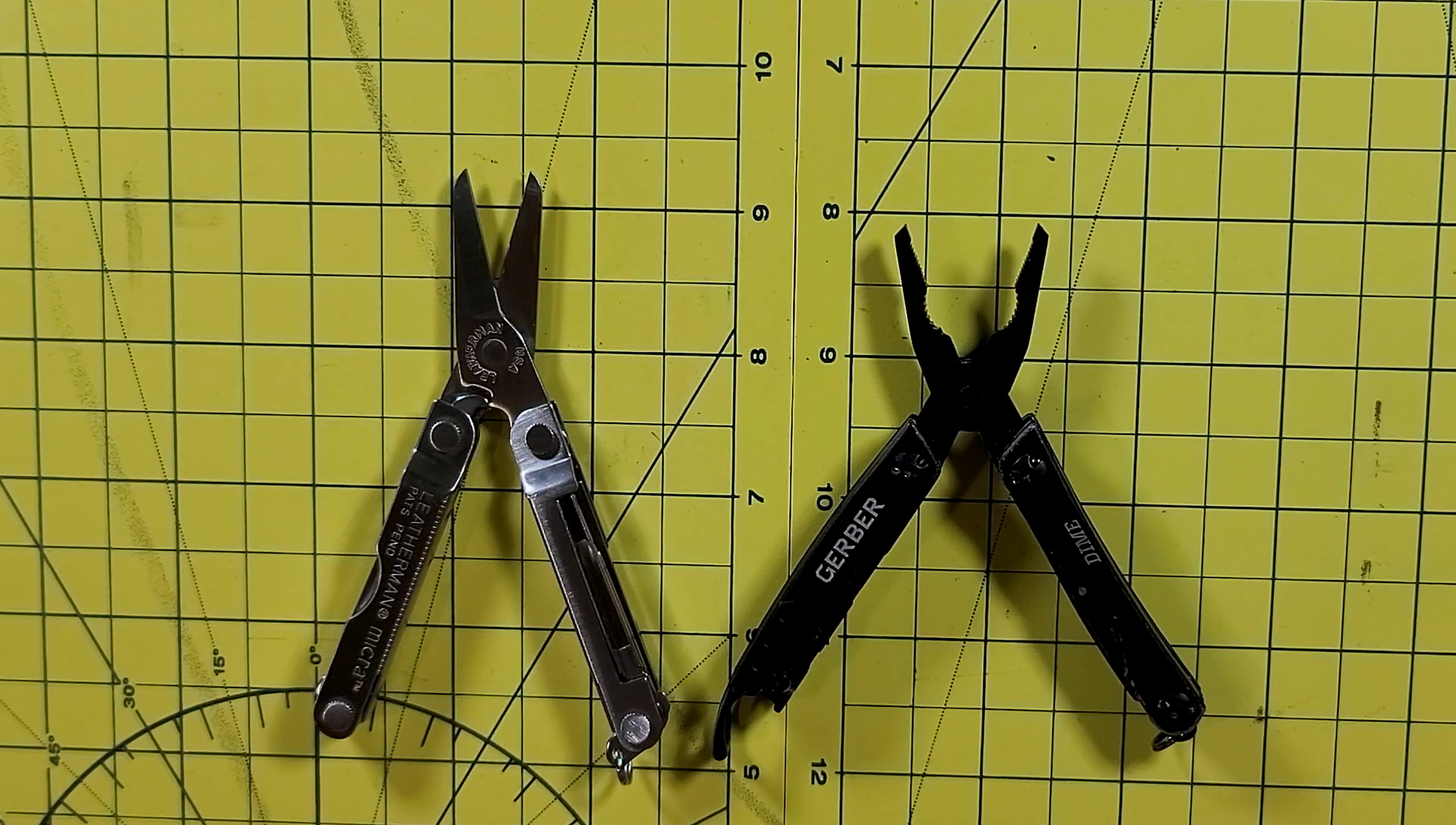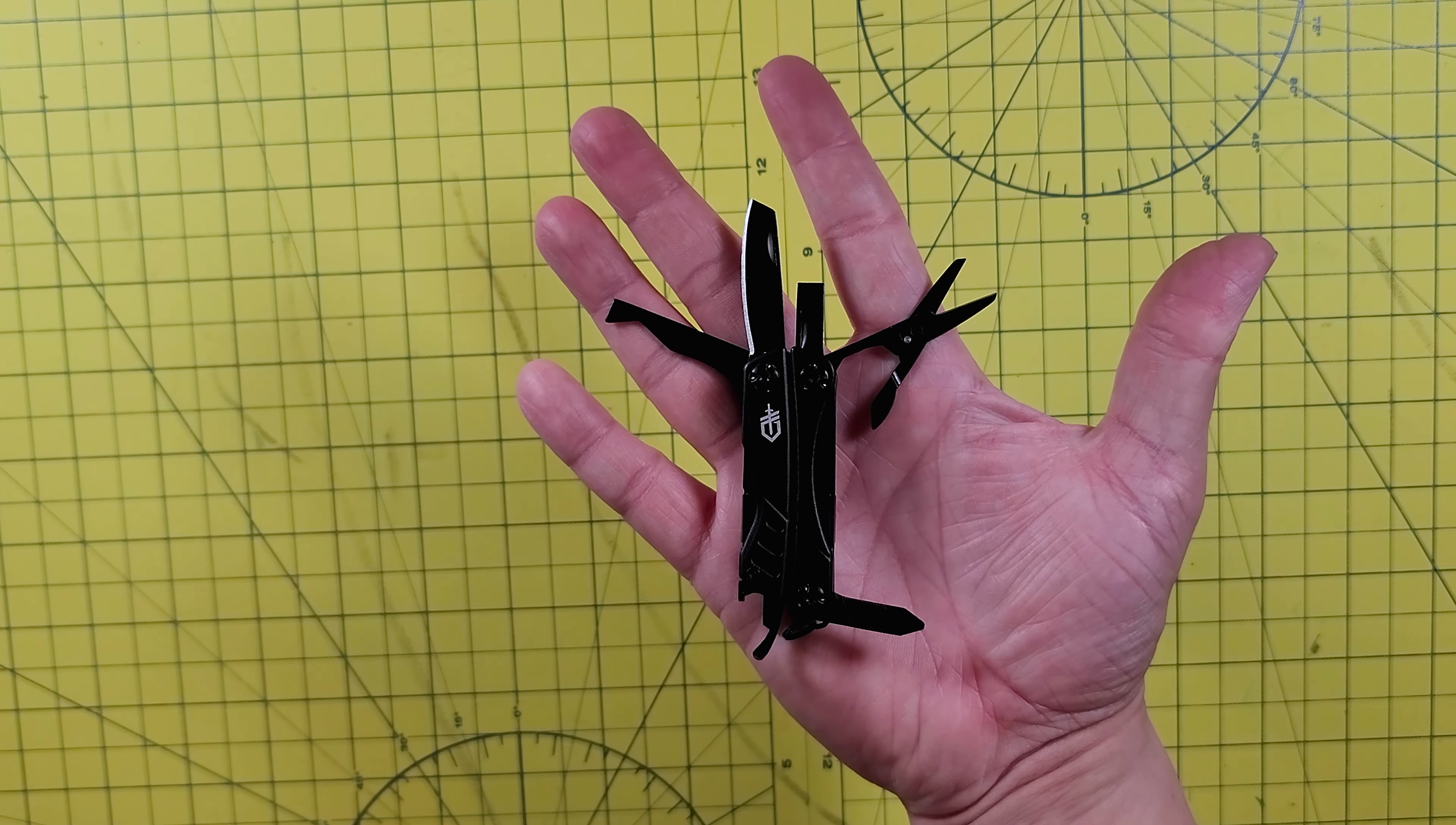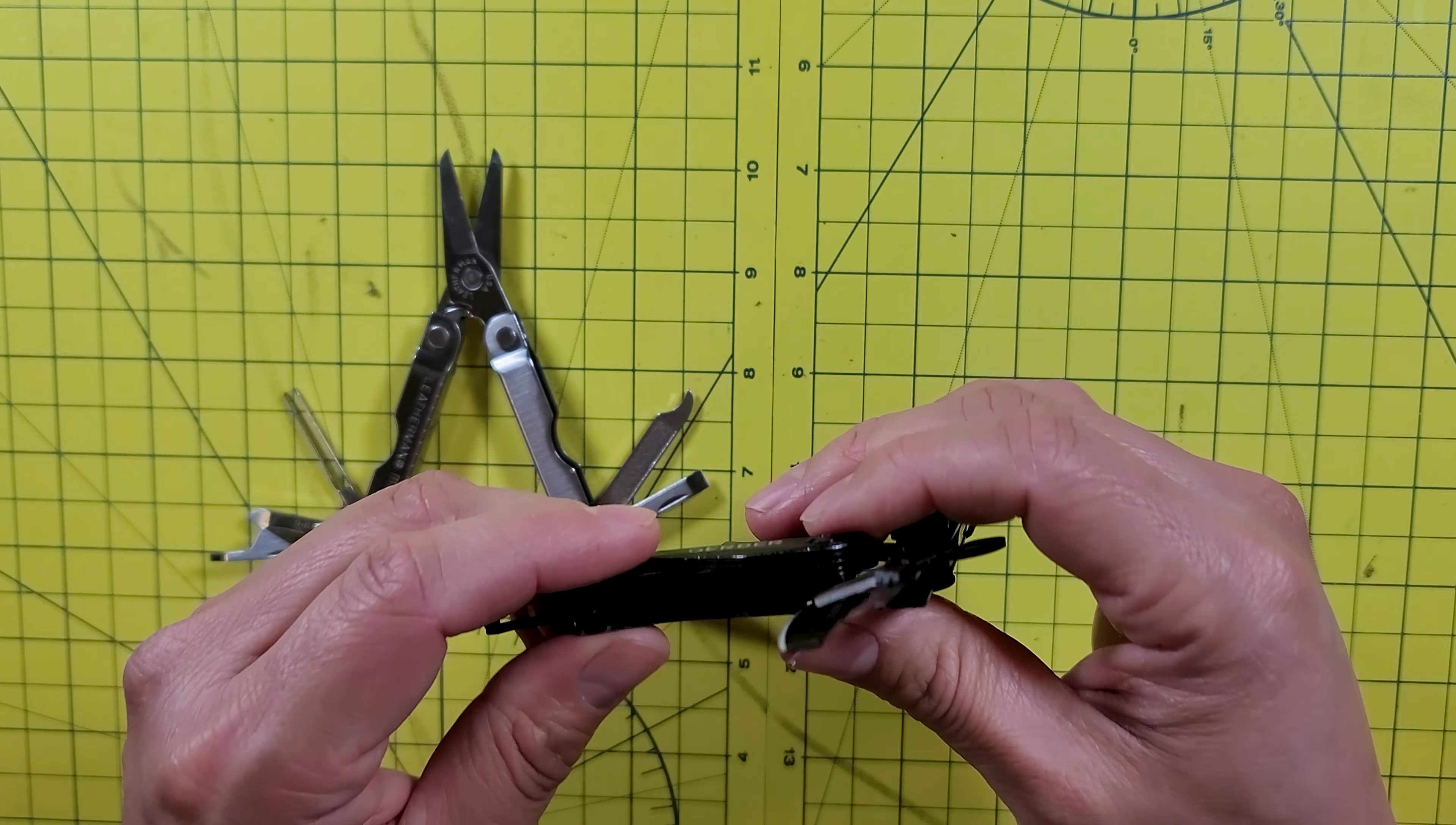First, let's take a look at the price. The Gerber Dime costs around $22.99 and the Leatherman Micro costs around $49.95, so you can practically buy two Dimes for the price of one Micro. If you constantly misplace your tools or you're afraid of losing your multi-tool, then carrying a cheaper multi-tool can be seen as a good thing. If you lose it, at least it won't hurt your wallet too much to replace it. But for many others, it also comes down to the tool quality and the tools included as well. So price cannot determine a winner.